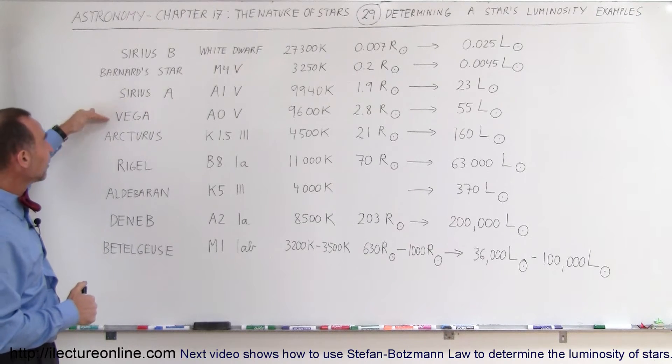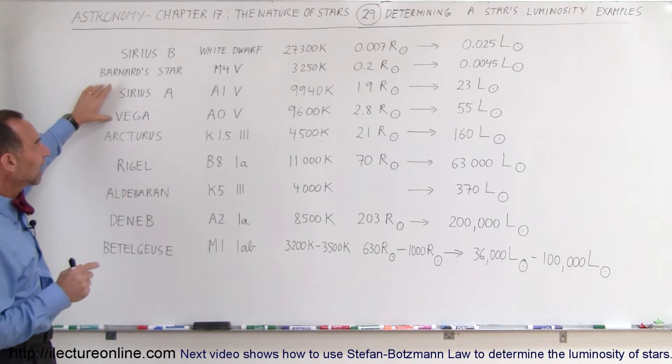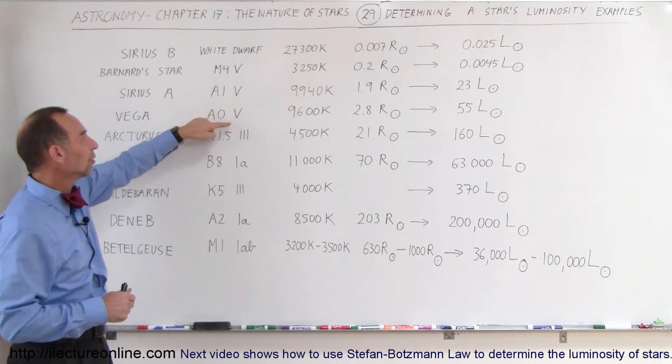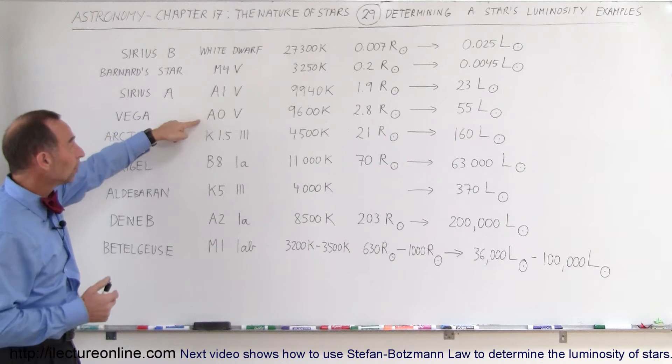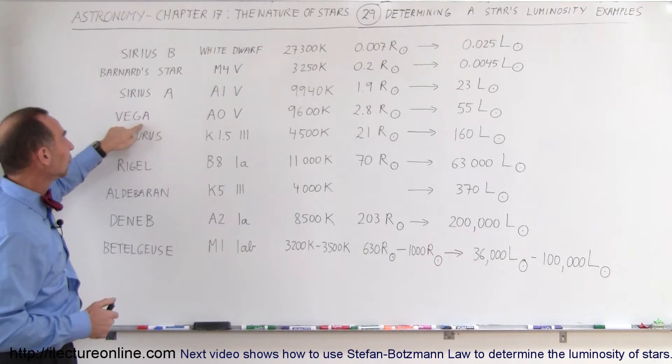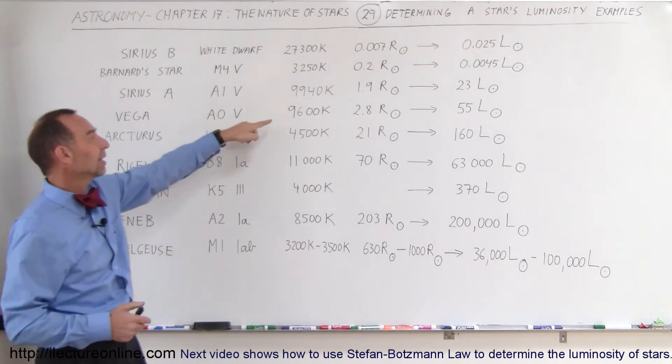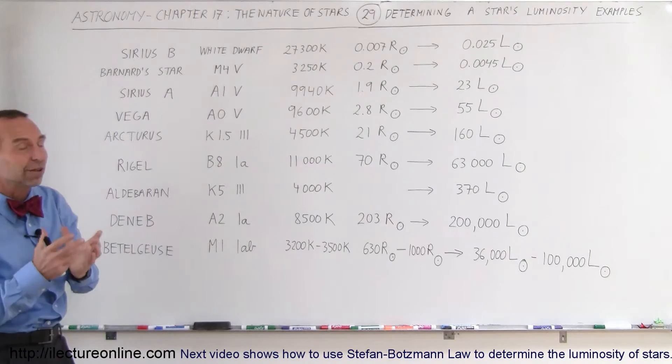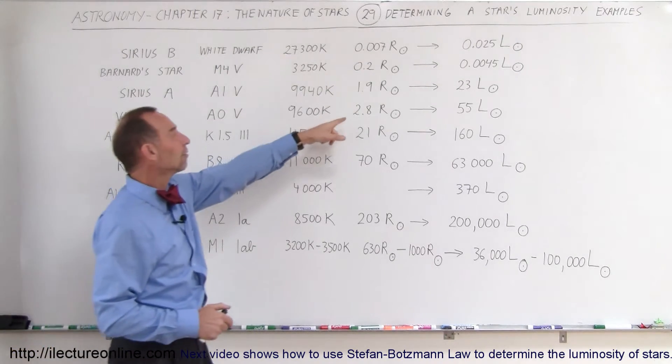For example, Sirius A and Vega, those are very close in the type of stars that they are. Notice there's an A1-5 and an A0-5 so they're both main sequence stars. They're very warm on the surface, very hot, they're whitish looking stars. Notice that Vega should be hotter than Sirius, but nevertheless, the numbers that we got is it looks like Sirius has a hotter surface temperature than Vega.